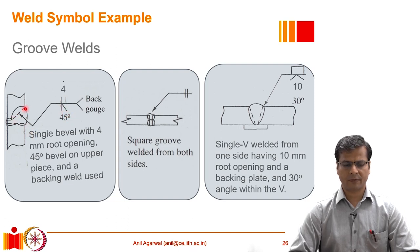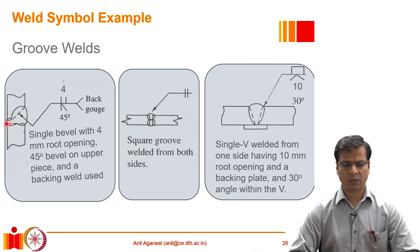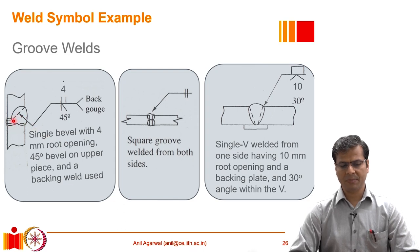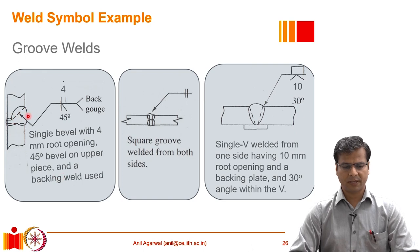Above the square symbol, the number 4 represents the root opening of the square groove — so the groove is prepared with a 4 mm root opening at the back and a 45-degree bevel at the front. Since we have both a bevel weld and a square weld, we cannot do both simultaneously. We weld from one side first, then use back gouging — removing any unfused metal — and then provide a backing weld on the back side.